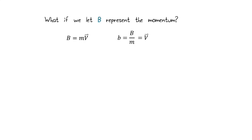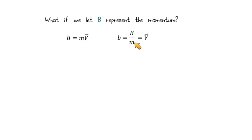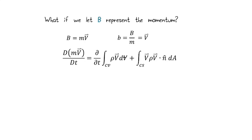Today we're talking about conservation of momentum. Let's let our B represent the momentum of the fluid. Momentum, as you should remember from physics, equals mass times velocity. Our little b equals capital B over M, so capital B over M gives us the velocity. Notice that these are vectors — velocity is a vector. So if I write that out into my Reynolds Transport Theorem equation, this is what I get.